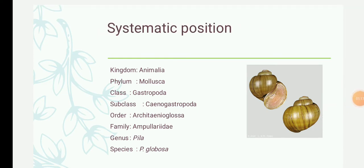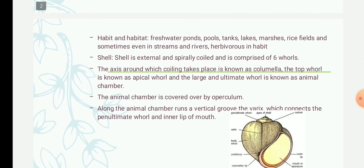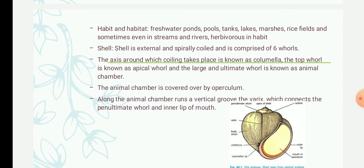Now we will see the habit and general characters of Pila globosa. Pila is commonly called the apple snail. It has a soft, unsegmented body covered by the mantle, which is further covered by the shell. This organism is asymmetric because the body and shell are spirally coiled. It appears to walk on a foot, hence it is classified under class Gastropoda. They are found in freshwater habitats like ponds, pools, tanks, and lakes.